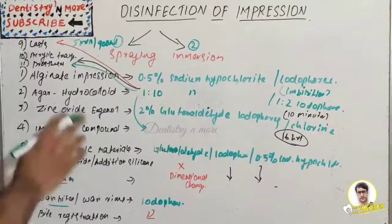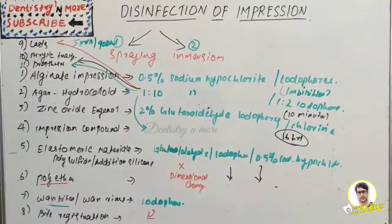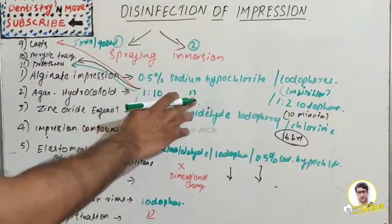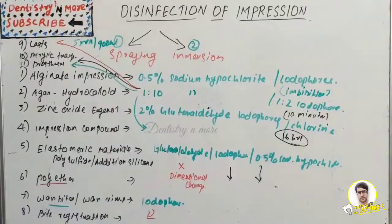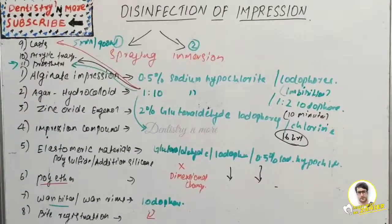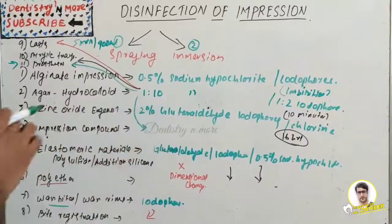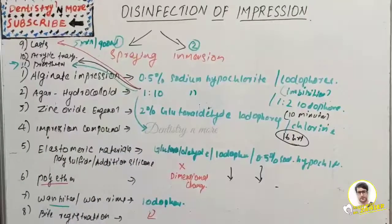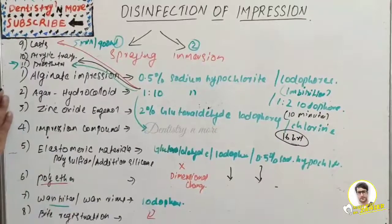For acrylic resin impression trays, the same method applies: 1:10 sodium hypochlorite or 1:2 iodophore. For prostheses or dental appliances, we use the same: 1:10 hypochlorite and 1:2 iodophore for 10 minutes. That covers all the major items in disinfection of impressions.